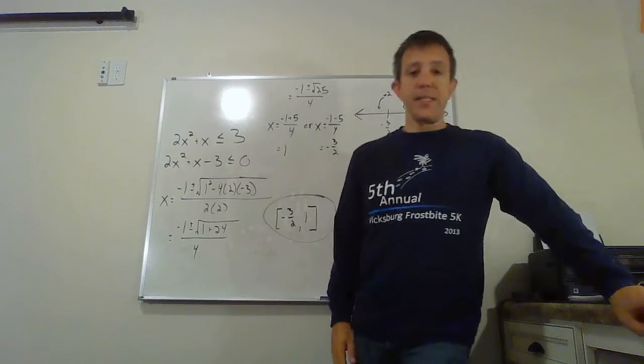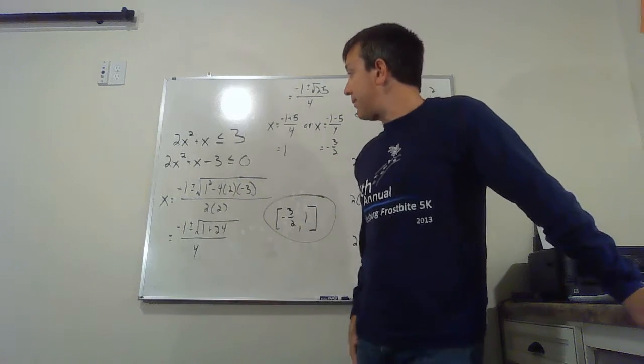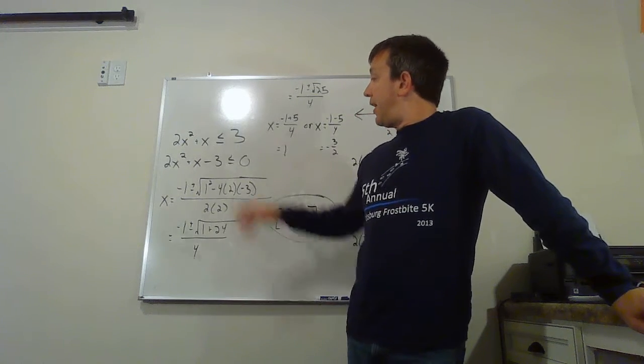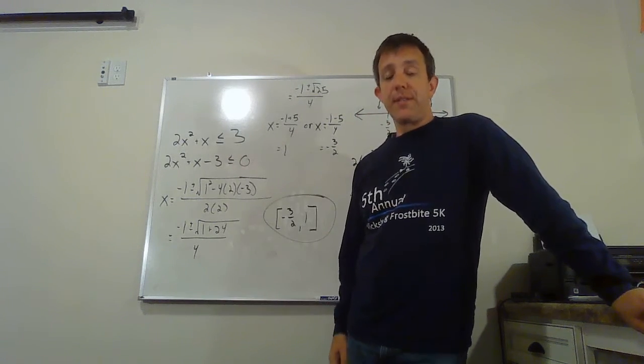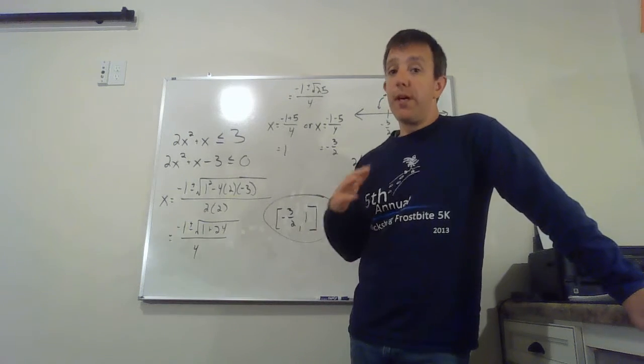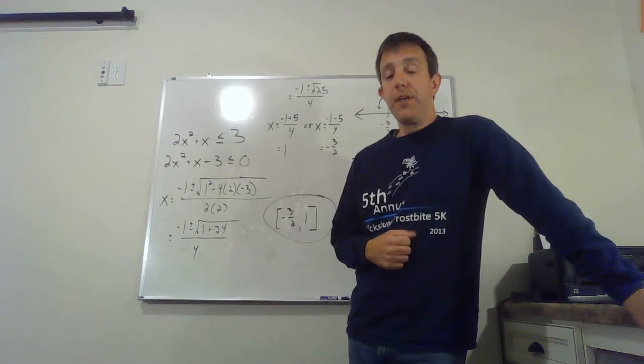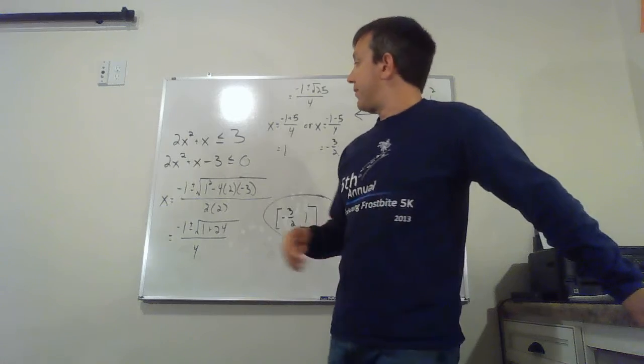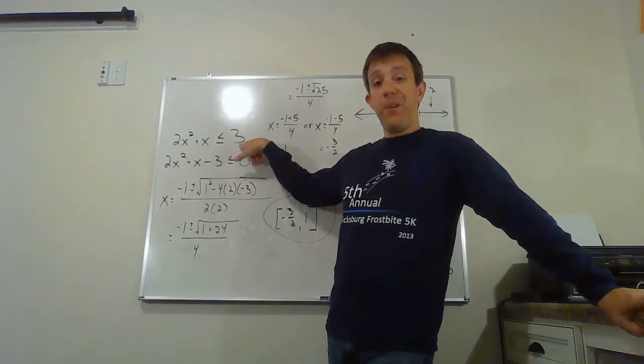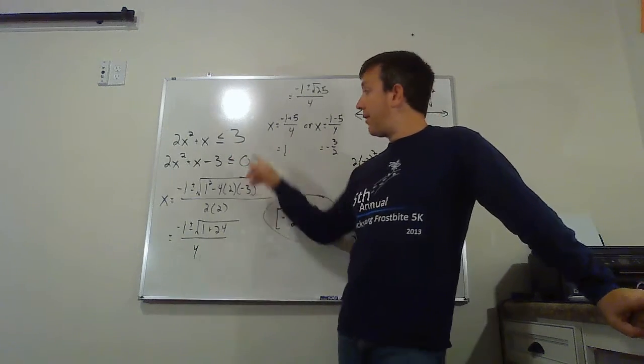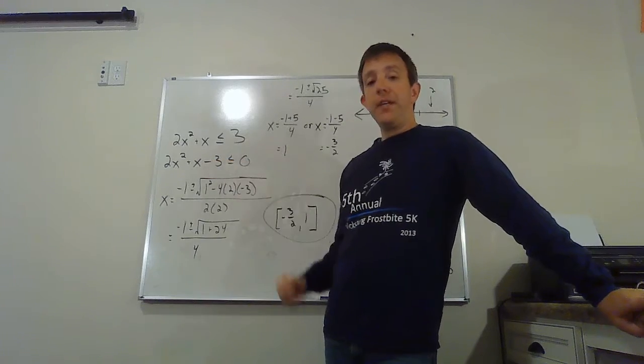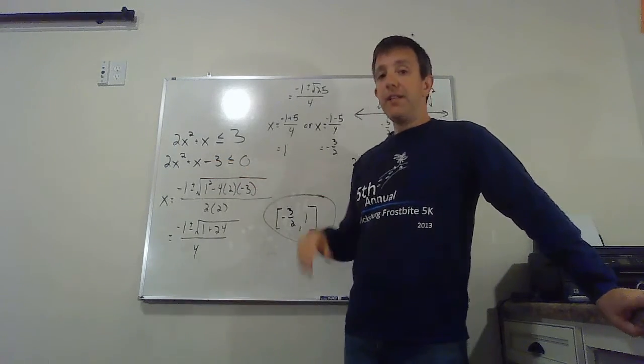Here's my next example. Actually, my last example. I have 2x squared plus x less than or equal to three. So again, first we need to find those zeros. Unfortunately, this was not factored. And even worse, we don't have zero on the other side. So I'm going to start by subtracting three so that I have the zero that I need to be able to solve this.